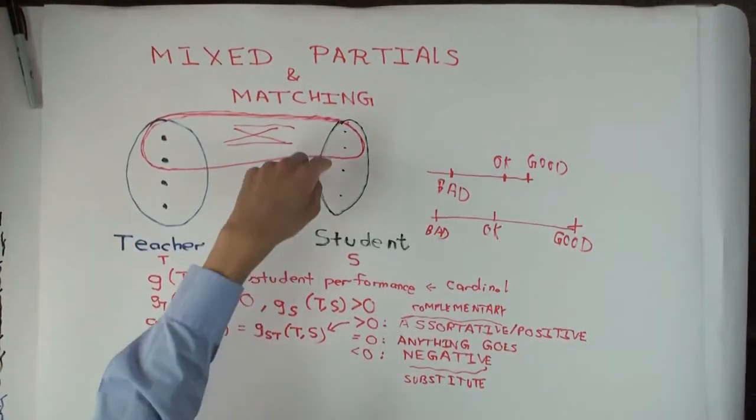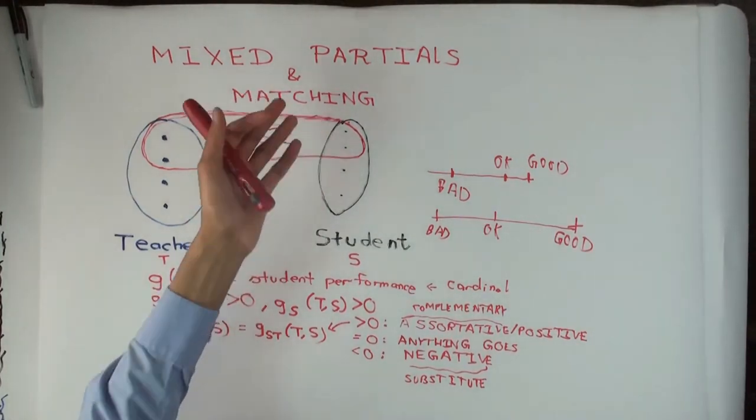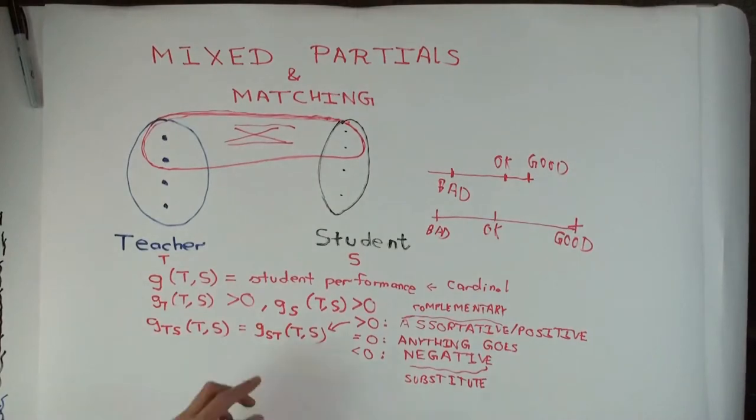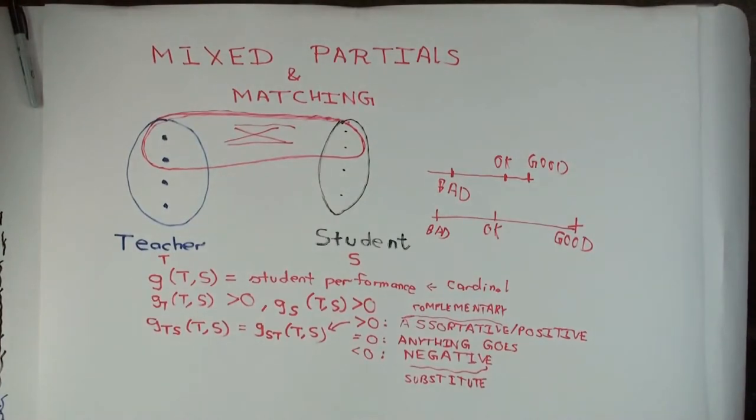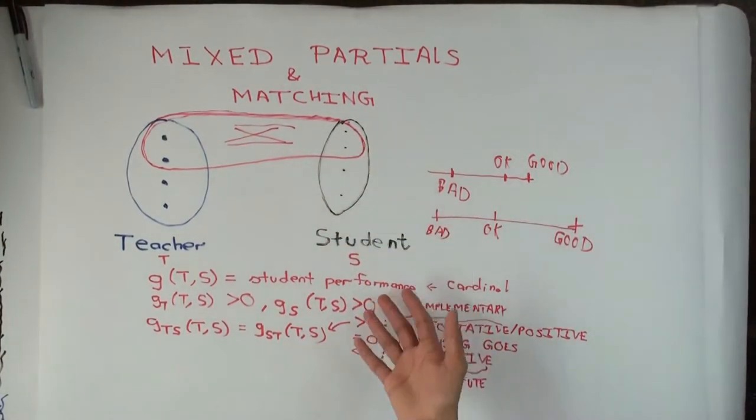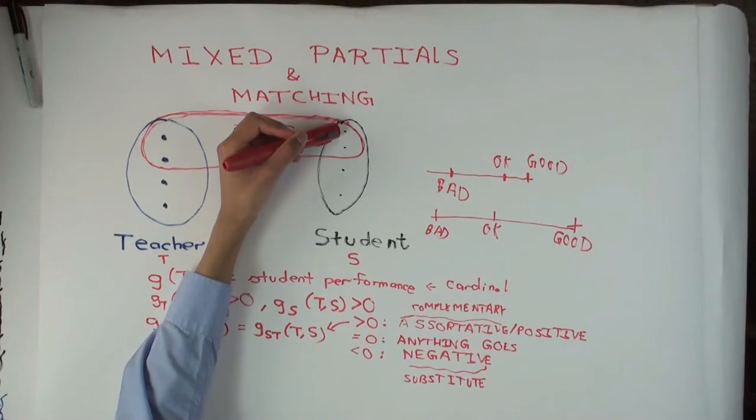You have these two teachers and two students. Let's say the students have to pay the teachers for the privilege of learning from them. Let's assume both students have enough money and can pay the teachers. We'll assume the student performance measures the utility the student gets and crudely measures the money the student is willing to pay. So both students have the same willingness to pay for a given amount of performance.